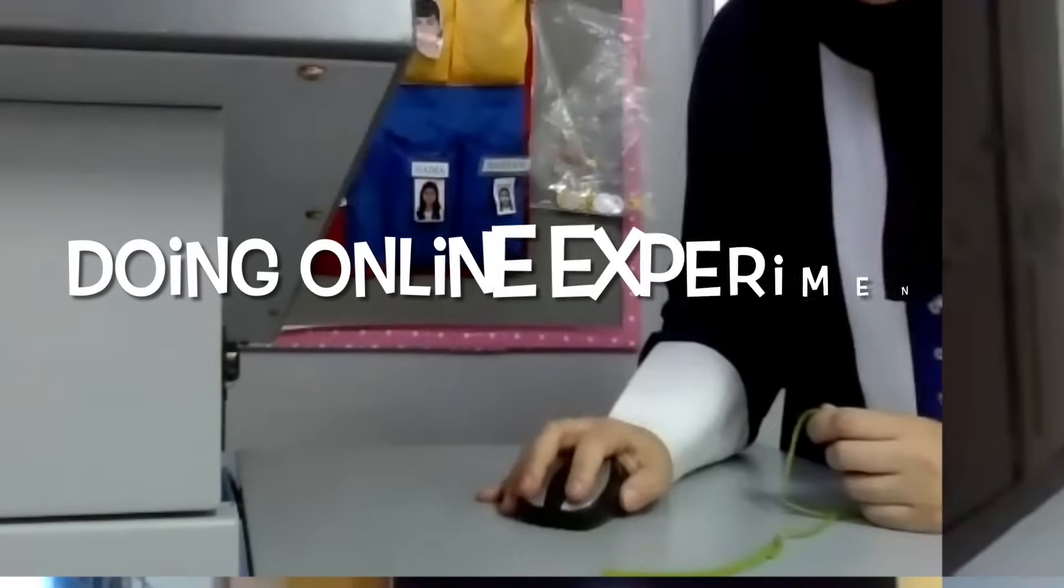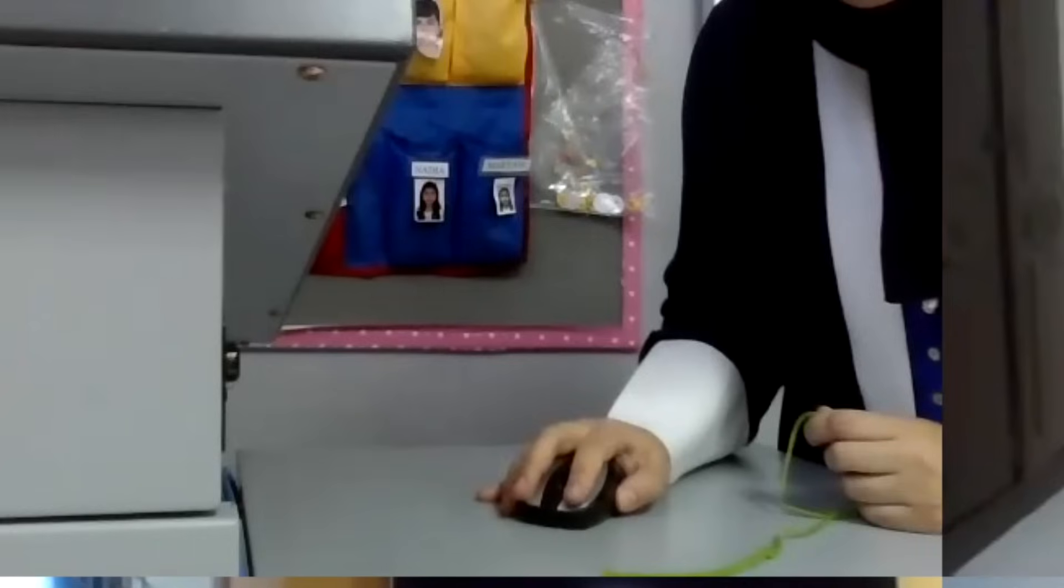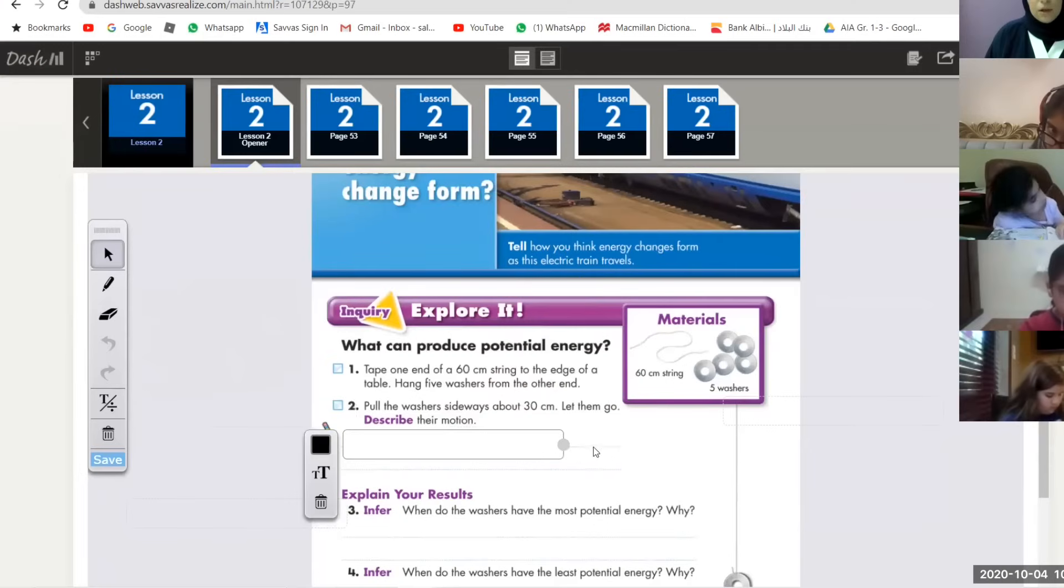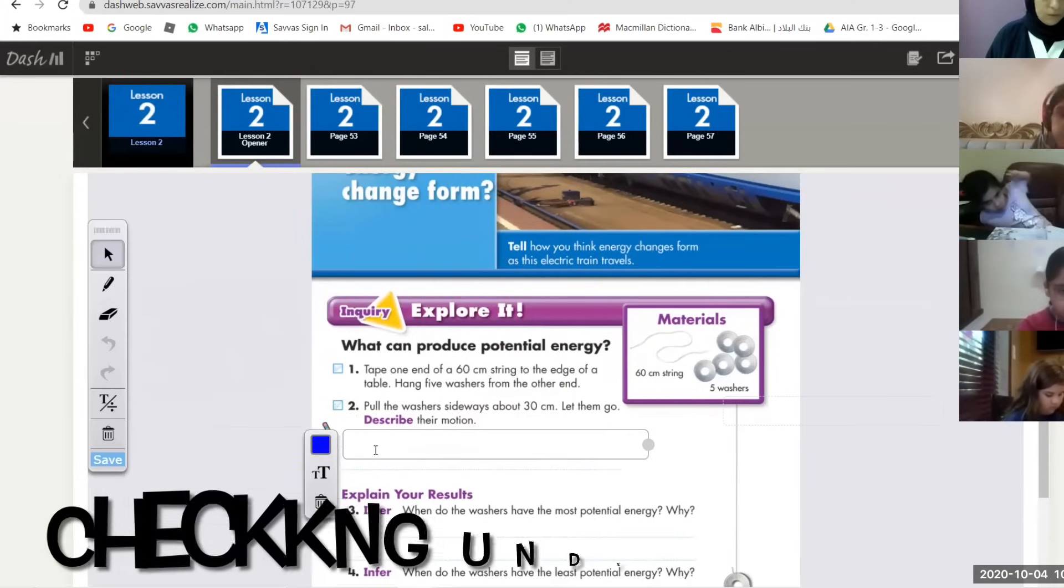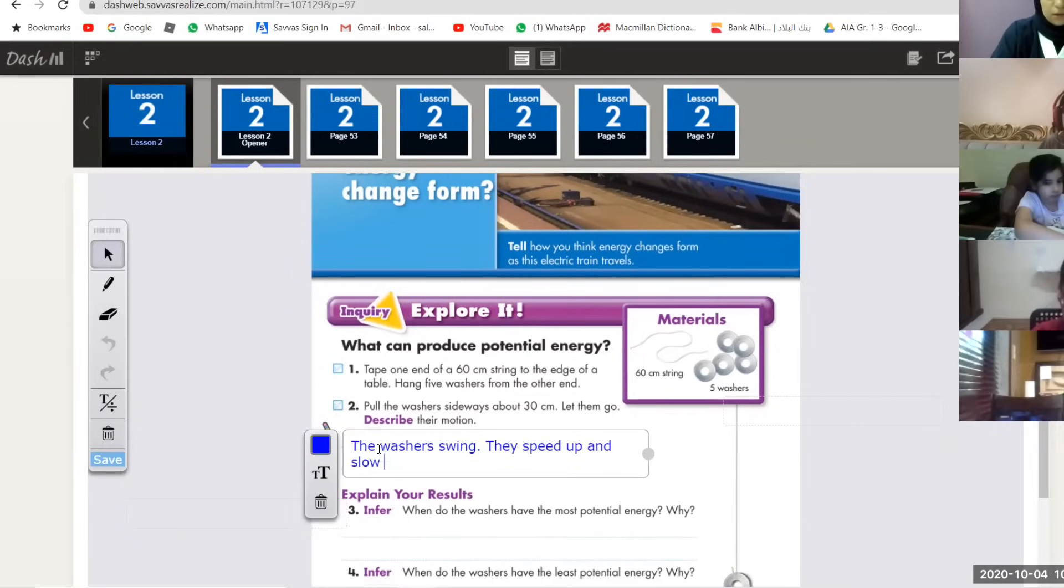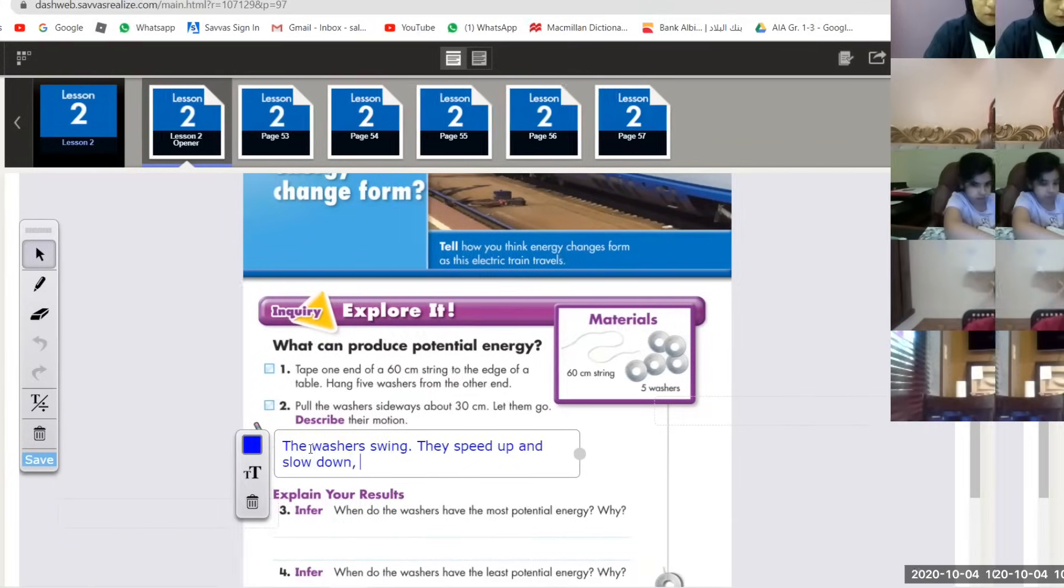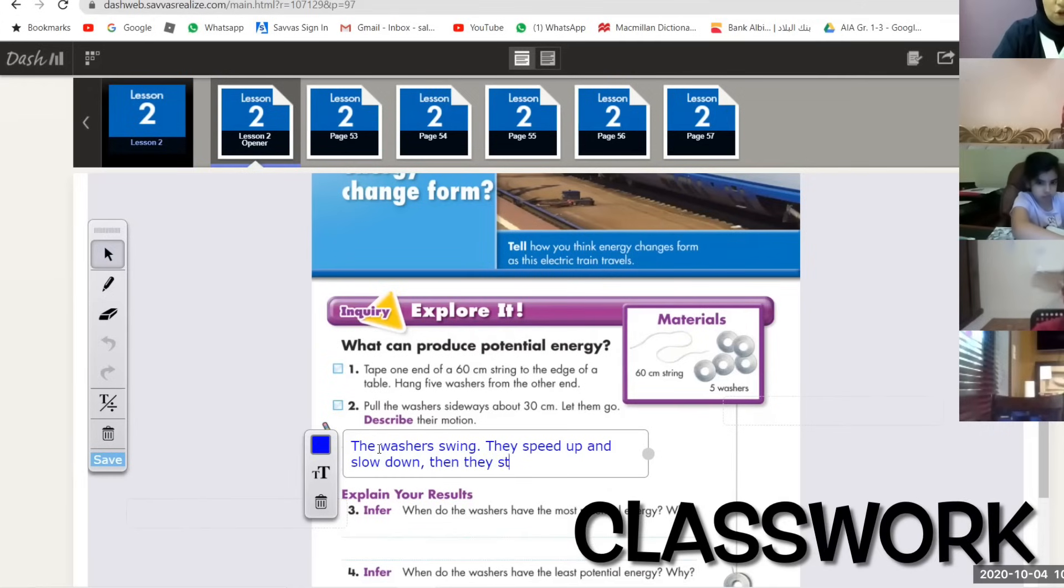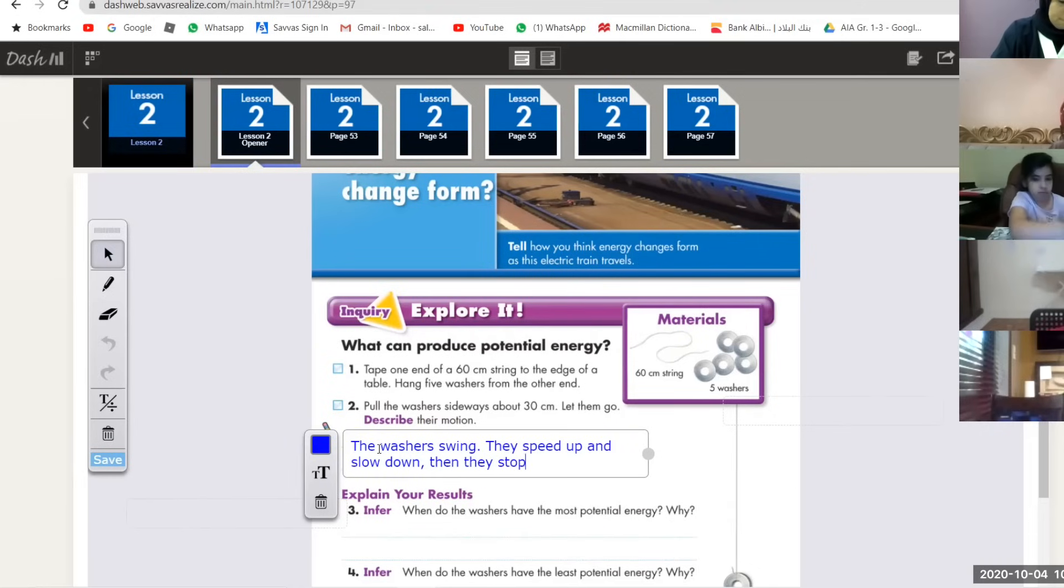This was the experiment of today, and you can do it by yourself at home also. Now hold your pencil. All of you hold your pencil and write the correct answer. So the washers swing, slow down, then they stop and change direction.